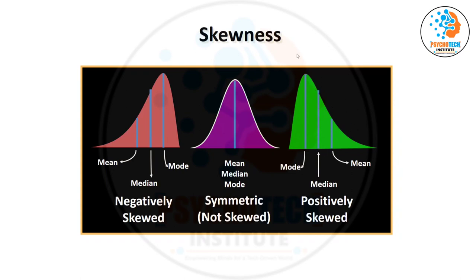So median is somehow better than mean when data is skewed. If we understand that our data is skewed, then the median is the best estimate. We call it an estimate because it's not the true value — it's a value that is going to represent that data.